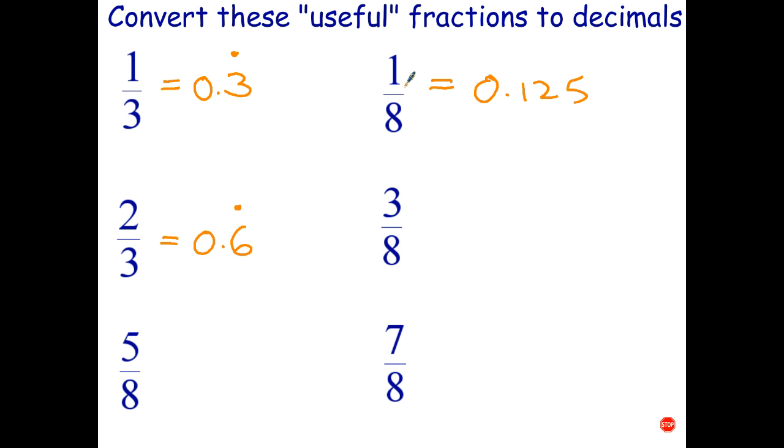Now once you know that, you can work out what 3/8 is just by multiplying that by 3. And 3 times 0.125 is 0.375. So once again, you can either memorize that or memorize just this one and then multiply by 3. Here you'd sort of say, well, 3 times 25 is 75, 3 times 1 is 3, and that's not too hard to do.